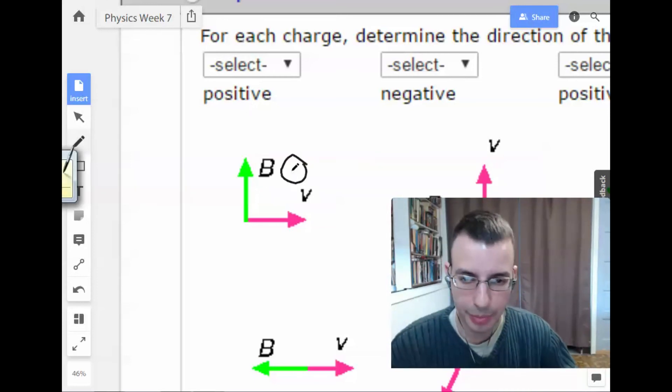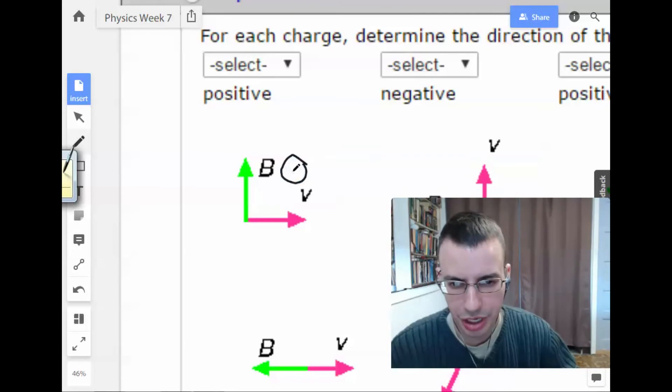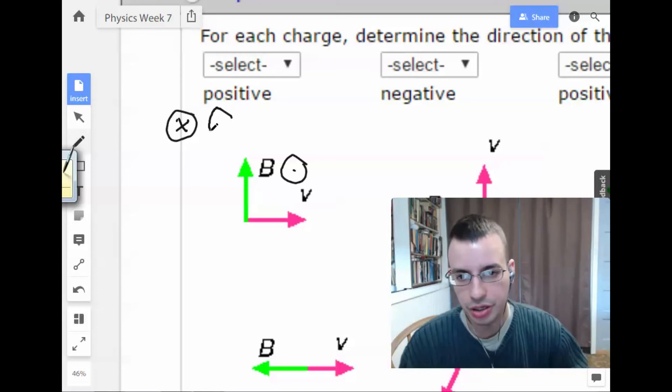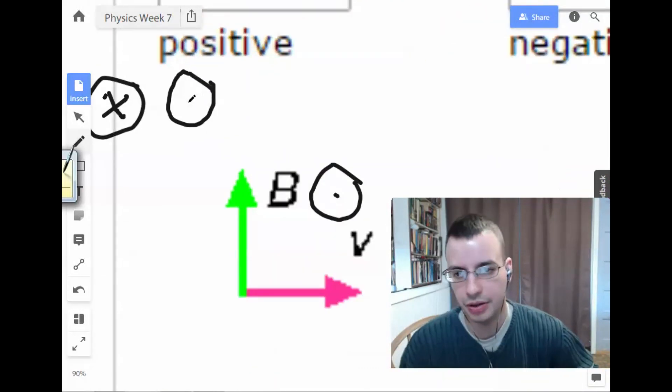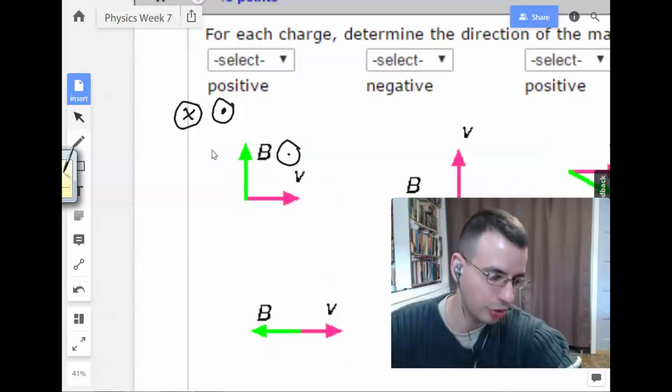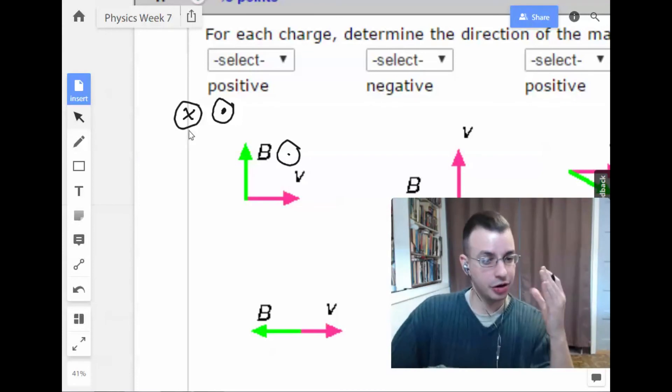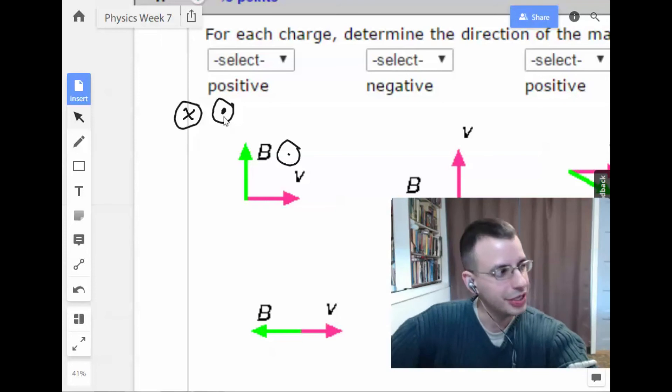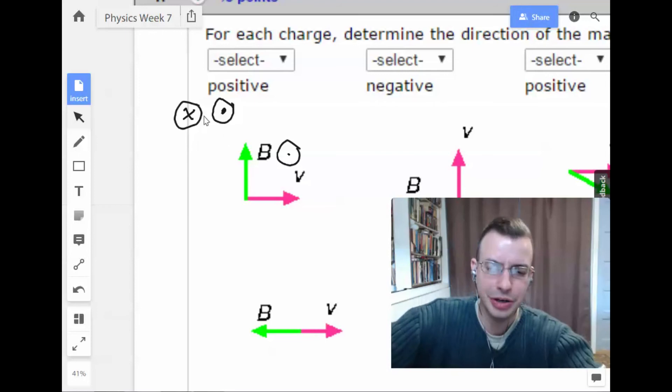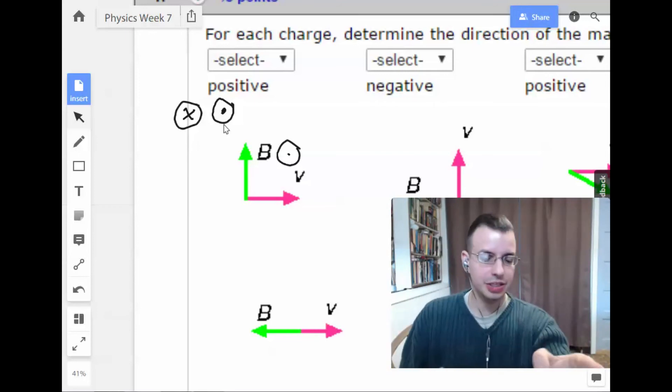So I'm going to draw this guy as a circle with a dot. In case you're unfamiliar with this notation, this is into the board while this is out. The way you think of this is an arrow, like an old Robin Hood style arrow. If you're looking at the arrow going away, you're going to see the little feathers. And if an arrow is coming towards you, all you see is the point. So into the page, out of the page.